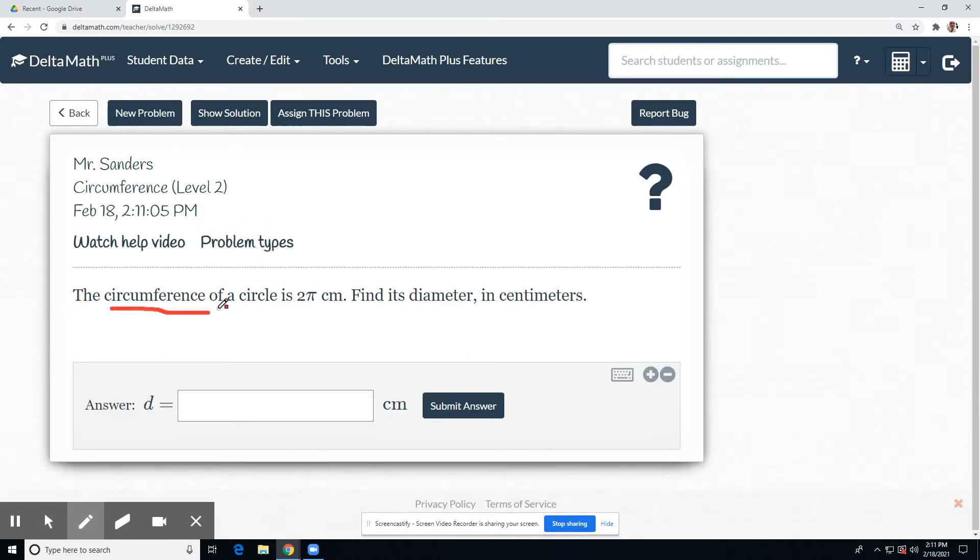The circumference of a circle is 2 pi centimeters. Find its diameter in centimeters. So what's the first thing we do? Write the equation. C equals 2 pi r.